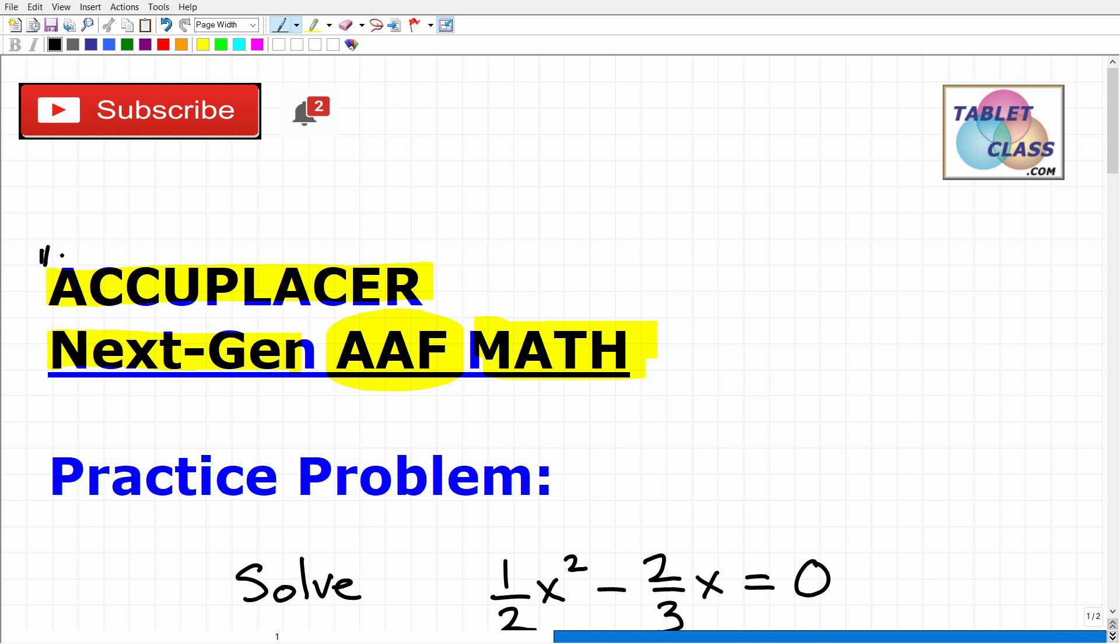Now, somebody out there could be preparing for just the Accuplacer exam. Just so you know, the Accuplacer is a math placement exam that colleges and universities use, but there are three different levels. There is an arithmetic-level Accuplacer, something called the QAS, and then we have the AAF.